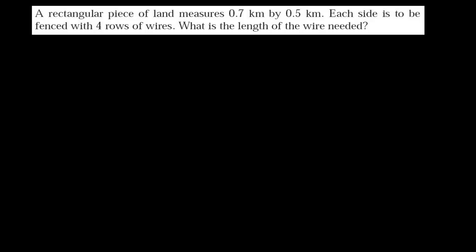Welcome friends, once again here is another problem of perimeter. Let me read the question: a rectangular piece of land measures 0.7 kilometer by 0.5 kilometer. This is the length and this is the breadth of the rectangular piece of land, and each side is to be fenced with four rows of wires.